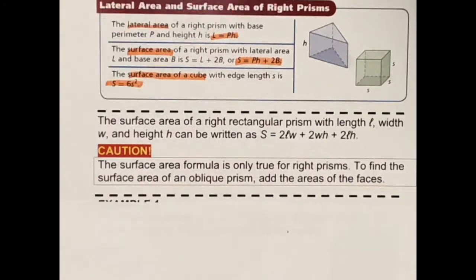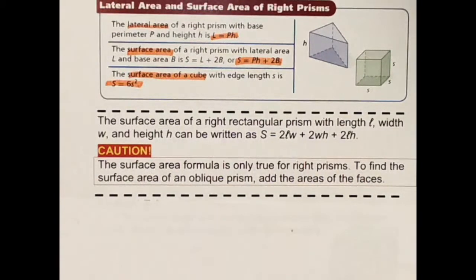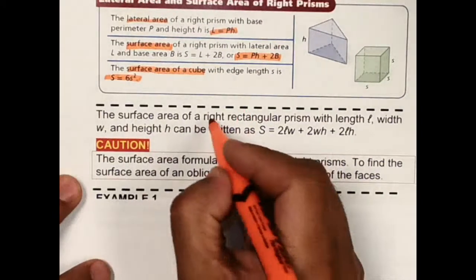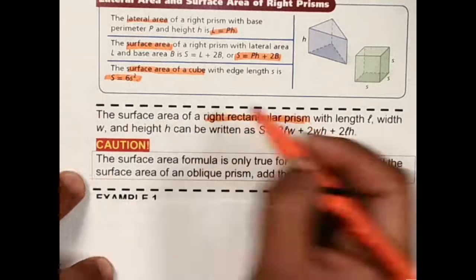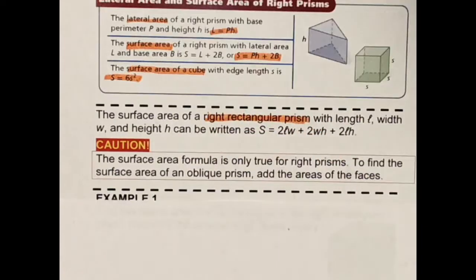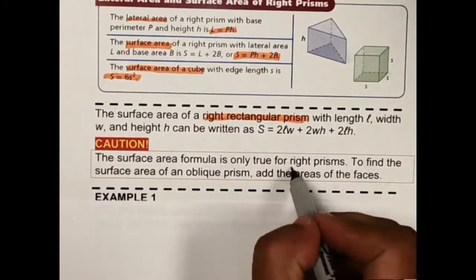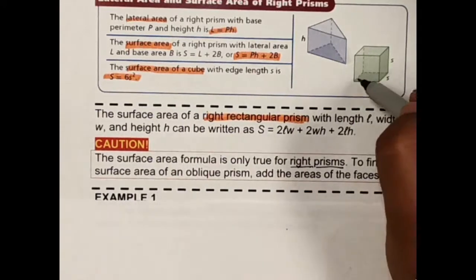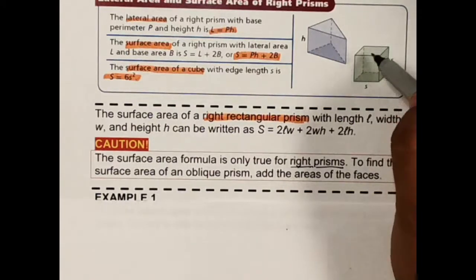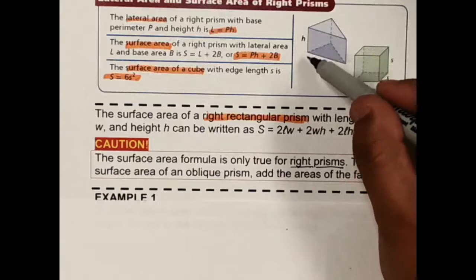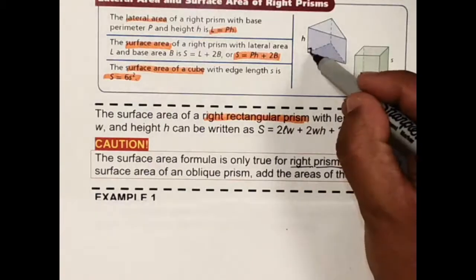For a right rectangular prism, the surface area can also be written as 2LW plus 2WH plus 2LH — a formula that might be a little easier for something you're more used to seeing. I want to warn you that the surface area formula is only true for right prisms, meaning these angles are all 90 degrees going from the base to the height.